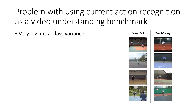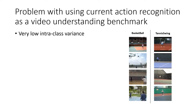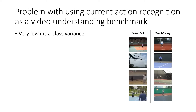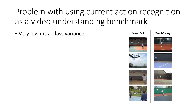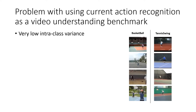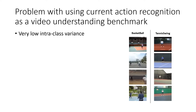However, we observe a shortcoming of using action recognition as a video understanding benchmark. We noted that current action recognition datasets, although having a large number of action classes, have very low intra-class variance. Here we have shown samples from two randomly chosen classes: basketball and tennis swing. As we can see, all the samples from each action class contain identical spatial-temporal signatures.